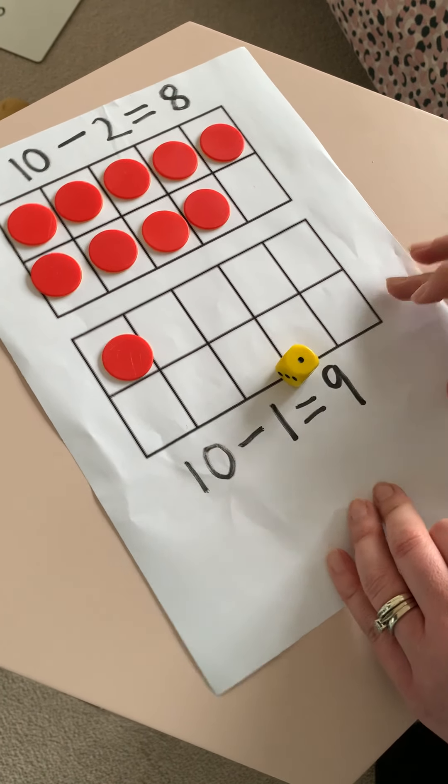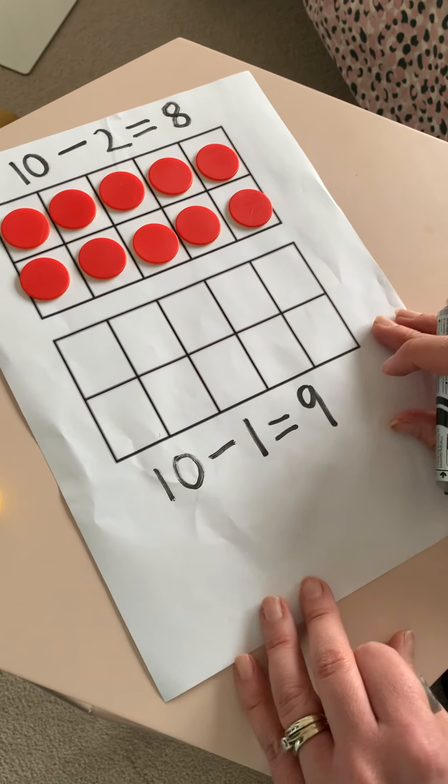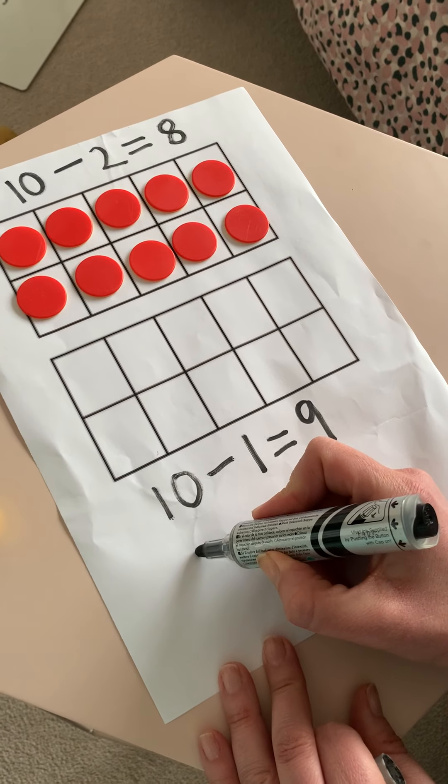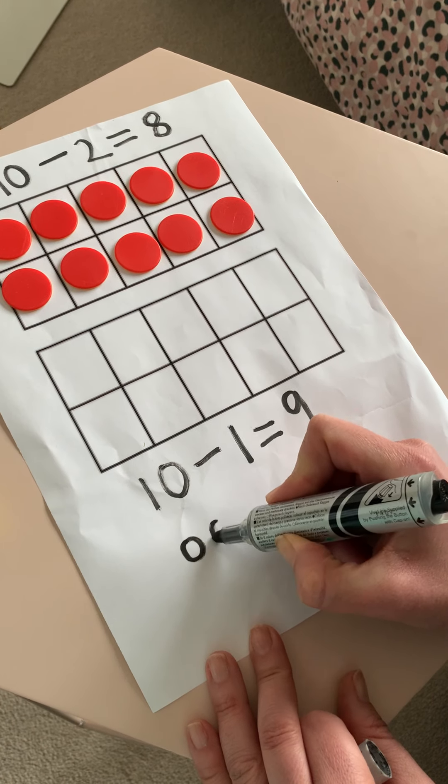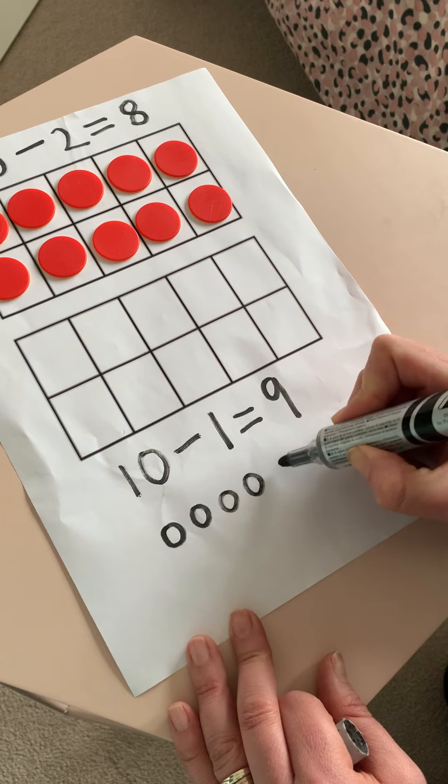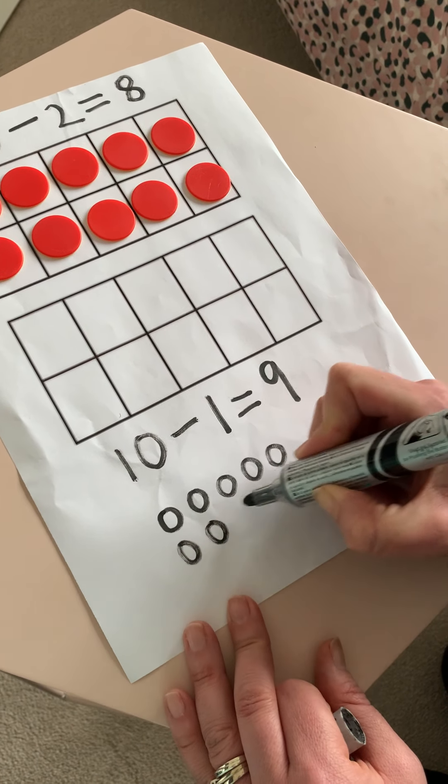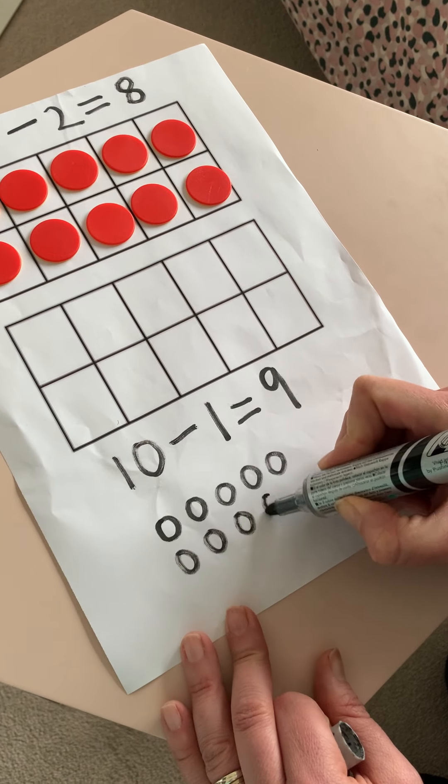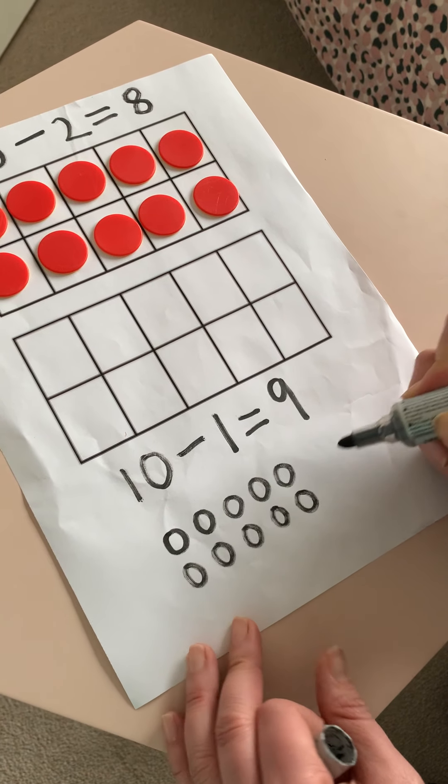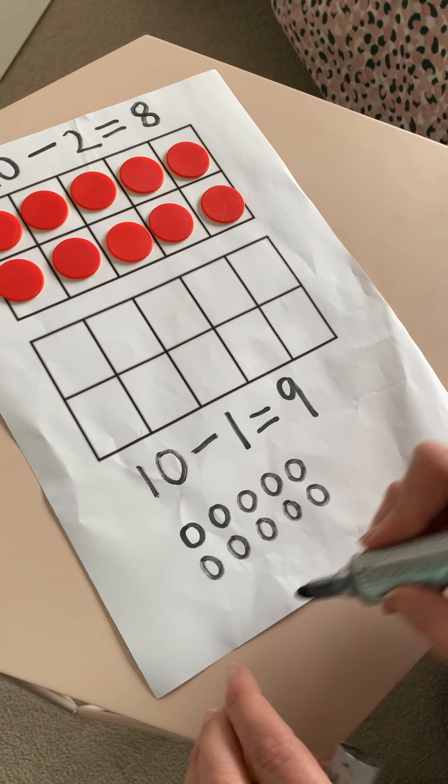Now if you haven't got any counters at home, you could always have a go at drawing them. So you could start by drawing 10 counters. 1, 2, 3, 4, 5, 6, 7, 8, 9, 10. And then you can have a look at how many you're going to take away. So you could write your sum.